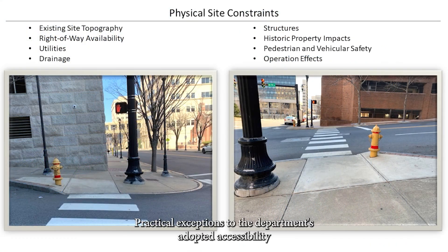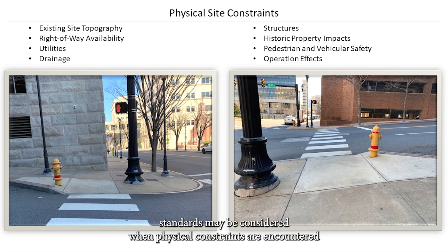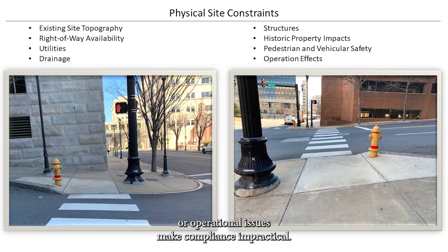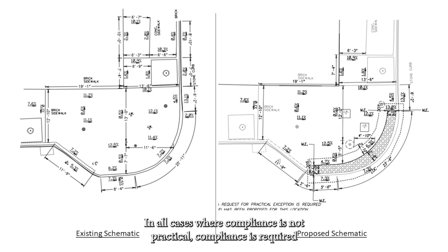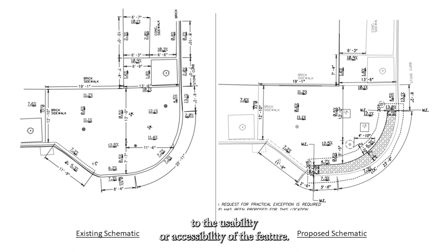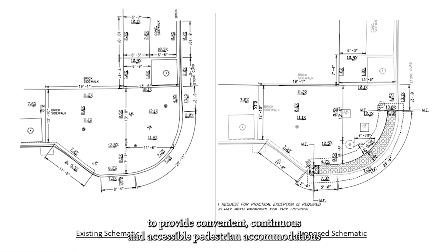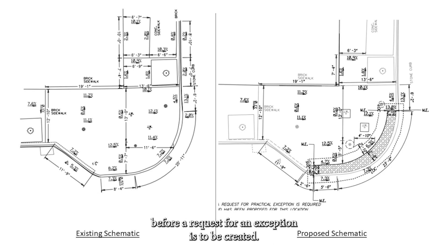Practical exceptions to the Department's adopted accessibility standards may be considered when physical constraints are encountered, or when public safety considerations or operational issues make compliance impractical. In all cases where compliance is not practical, compliance is required to the maximum extent practicable and must not result in a detriment to the usability or accessibility of the feature. All reasonable alternatives to provide convenient, continuous, and accessible pedestrian accommodations must be exhausted using sound engineering judgment before a request for an exception is created.